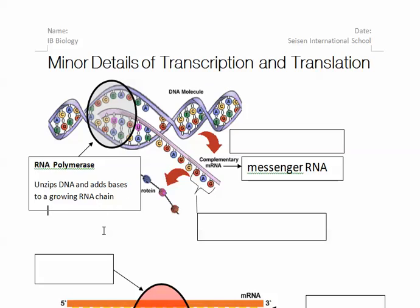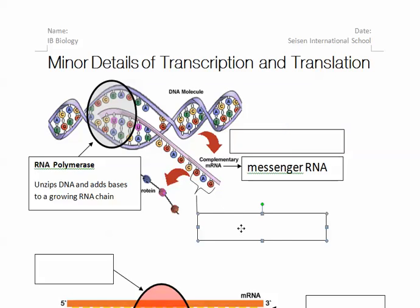RNA polymerase unzips the DNA and adds bases to a growing RNA chain. The code here is just a string of letters, but this string of letters actually codes for something — every three of these letters will eventually be translated into an amino acid. So every three letters we call a codon. That's what it physically looks like on the DNA.